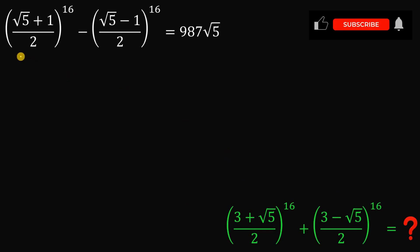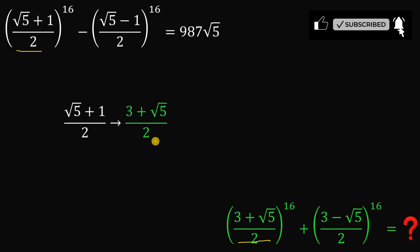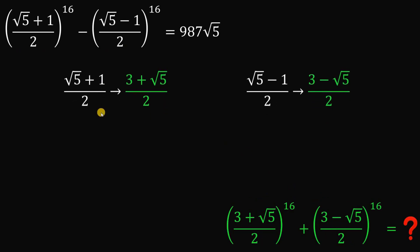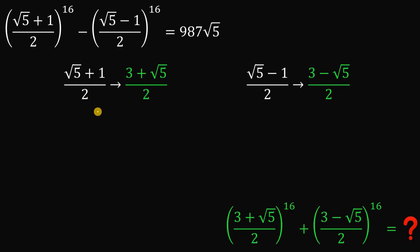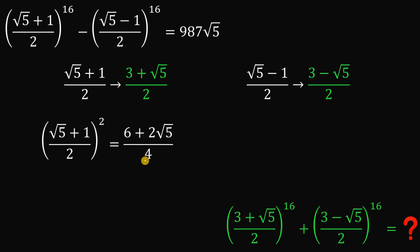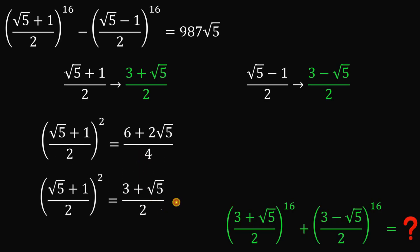Before we begin the solution, we need to observe the two expressions: (√5 + 1)/2 and (3 + √5)/2. If we square (√5 + 1)/2, we square the numerator to get 5 + 2√5 + 1 by binomial expansion, all over 4. Simplifying: 6 + 2√5 over 4, which reduces to (3 + √5)/2.